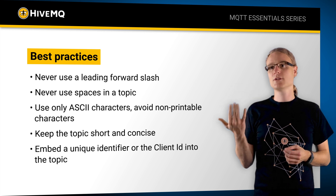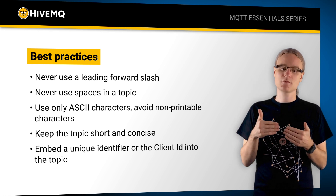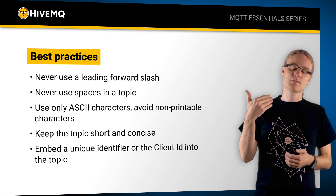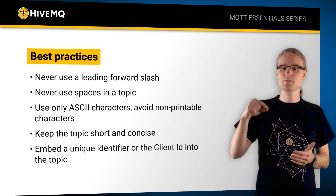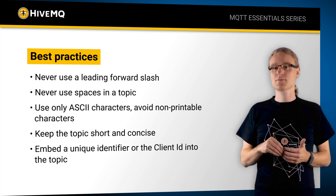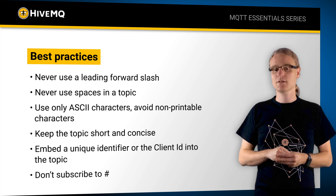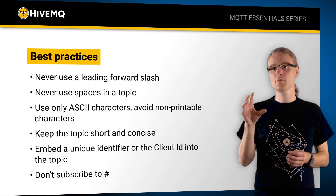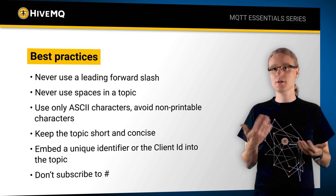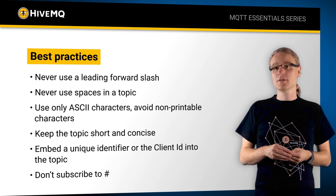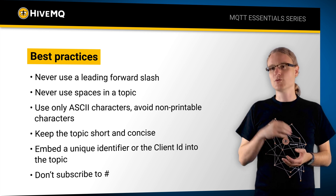Use the client ID for individual subscriptions — you can use the client identifier directly in topics, especially for subscriptions that are only relevant to one specific client. A good pattern is a so-called command channel for cloud-to-device messaging, where you have a subscription for a specific device. Last but not least, never subscribe to the root hashtag, which means a single client would receive all messages on the MQTT broker. This is disallowed by most brokers in production for security reasons, and your client probably won't be able to handle hundreds of thousands of messages per second.